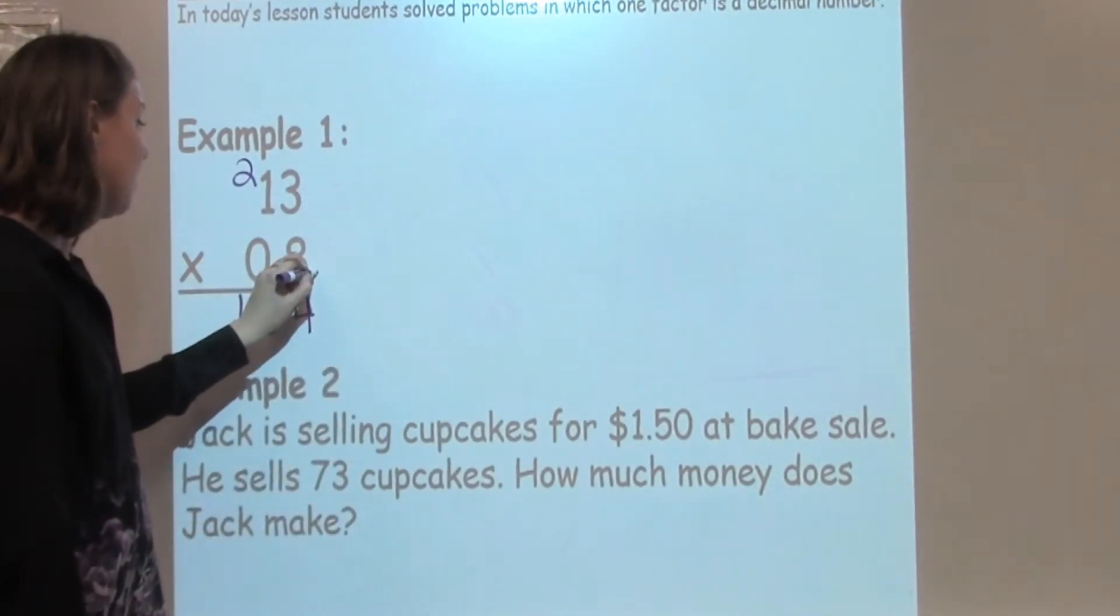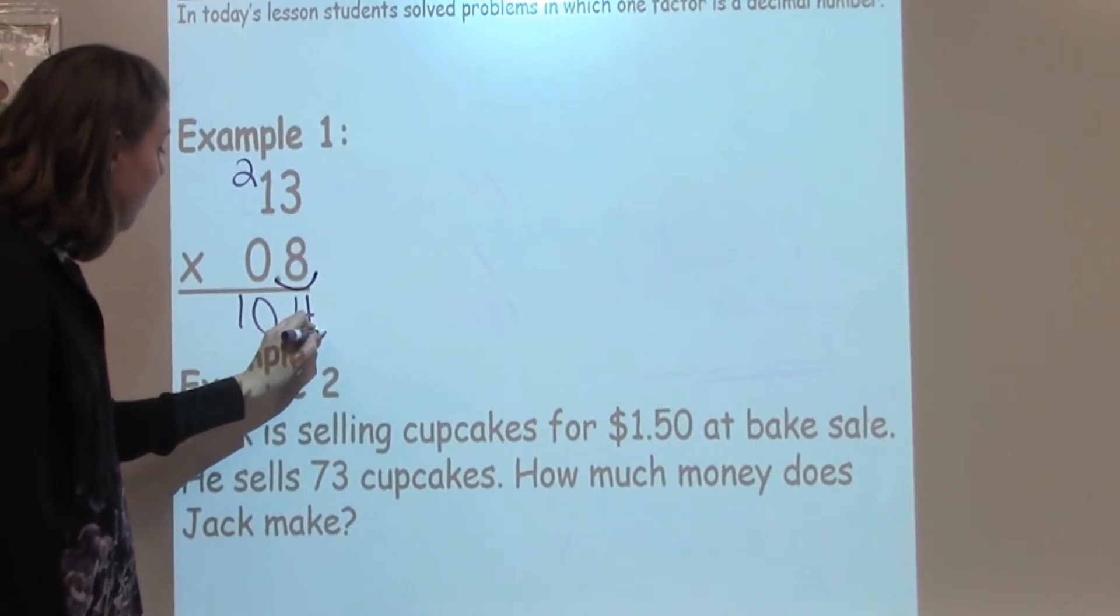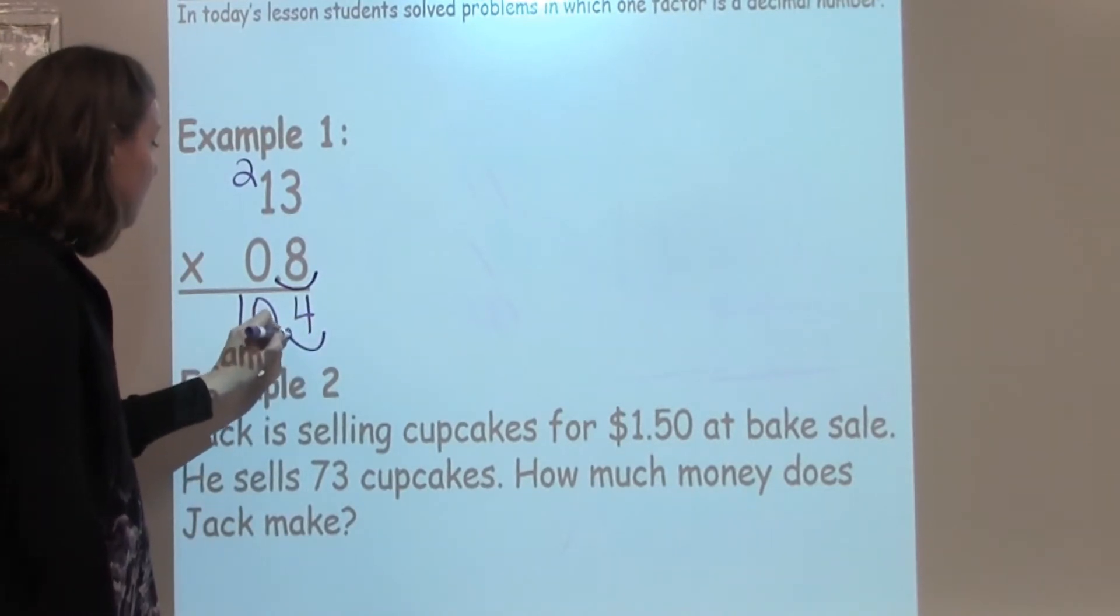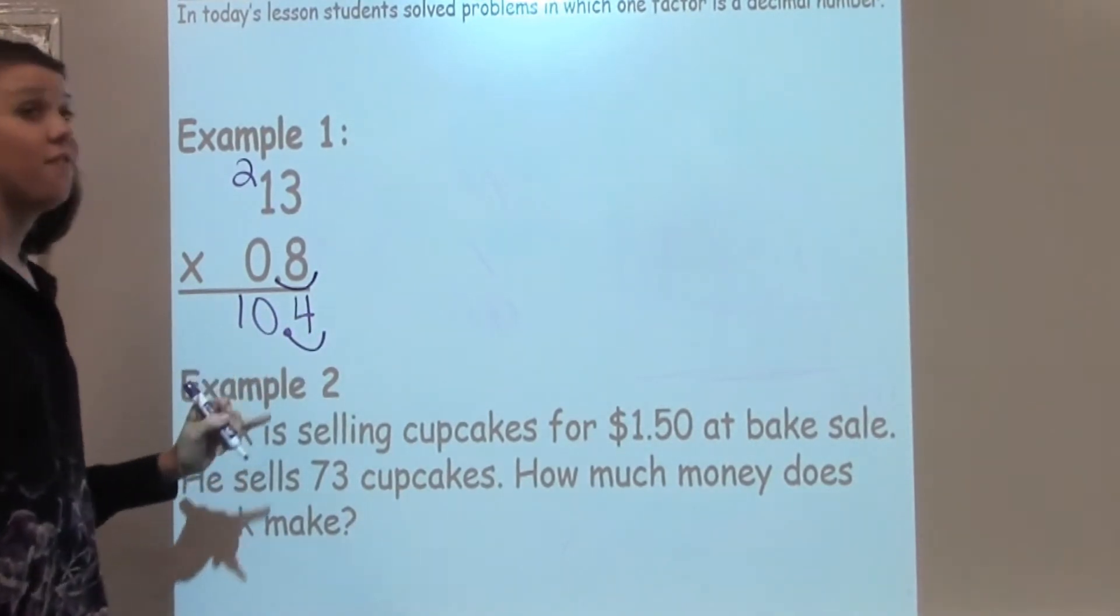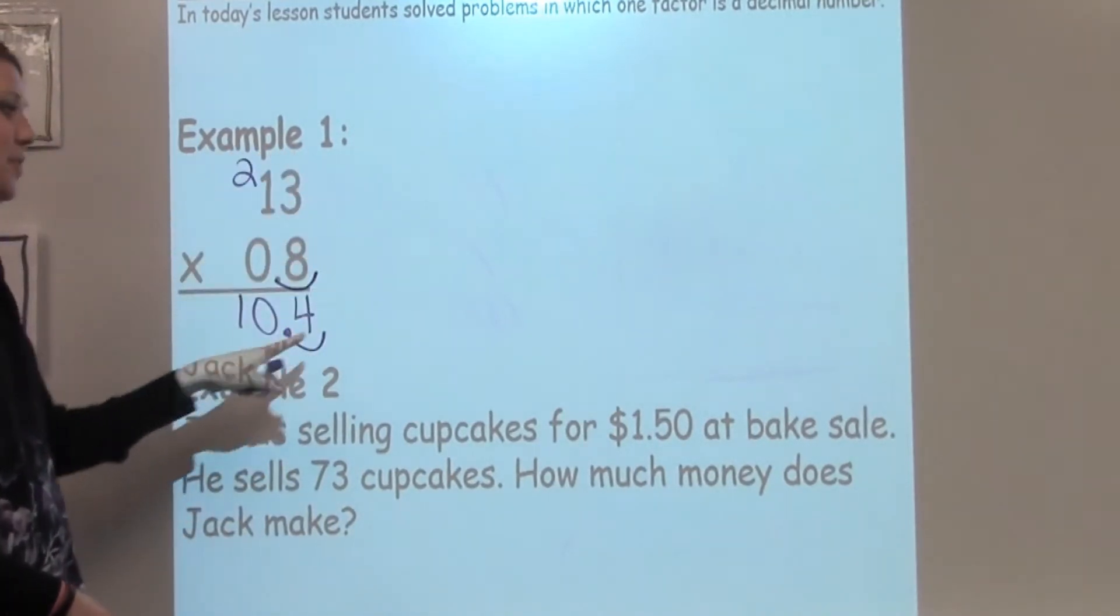Now, pop that decimal back in. What you're going to do is go to the very end of the number, hop over one spot, go to the very end of the number, hop in one spot. So, my answer becomes 10 and 4 tenths, which is much more reasonable when we're looking at this problem.